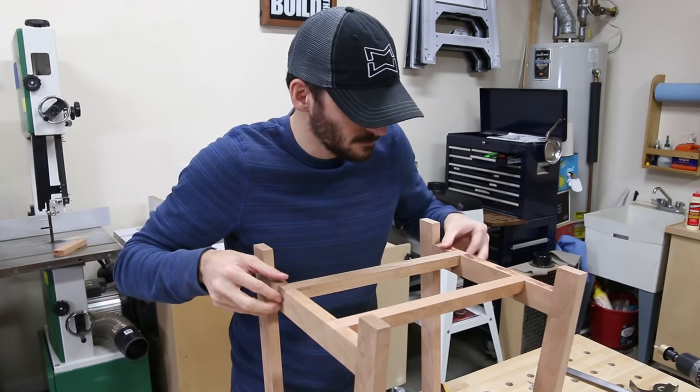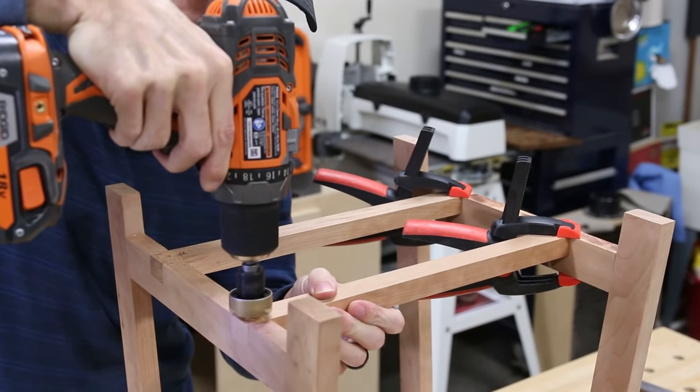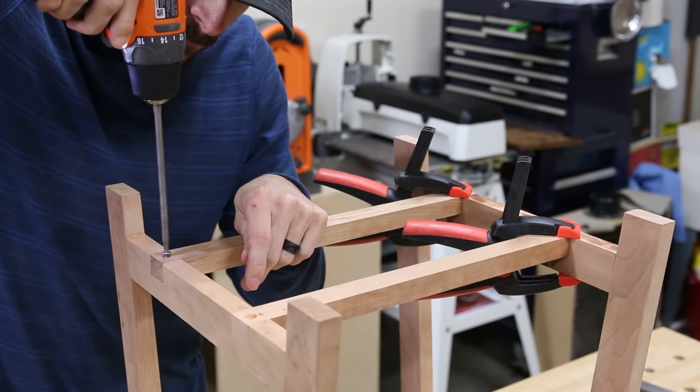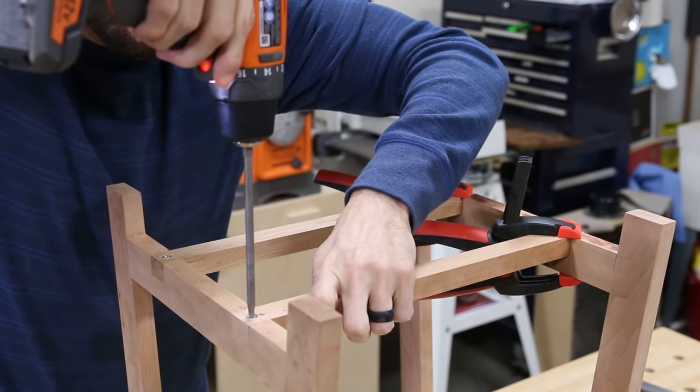I dry clamped the top apron between the sides and I installed the lower stretchers with screws with the base upside down. Getting these two pieces to align with the lower rails is the most important part of the nesting feature of this assembly and this was the only way I could think to do it.